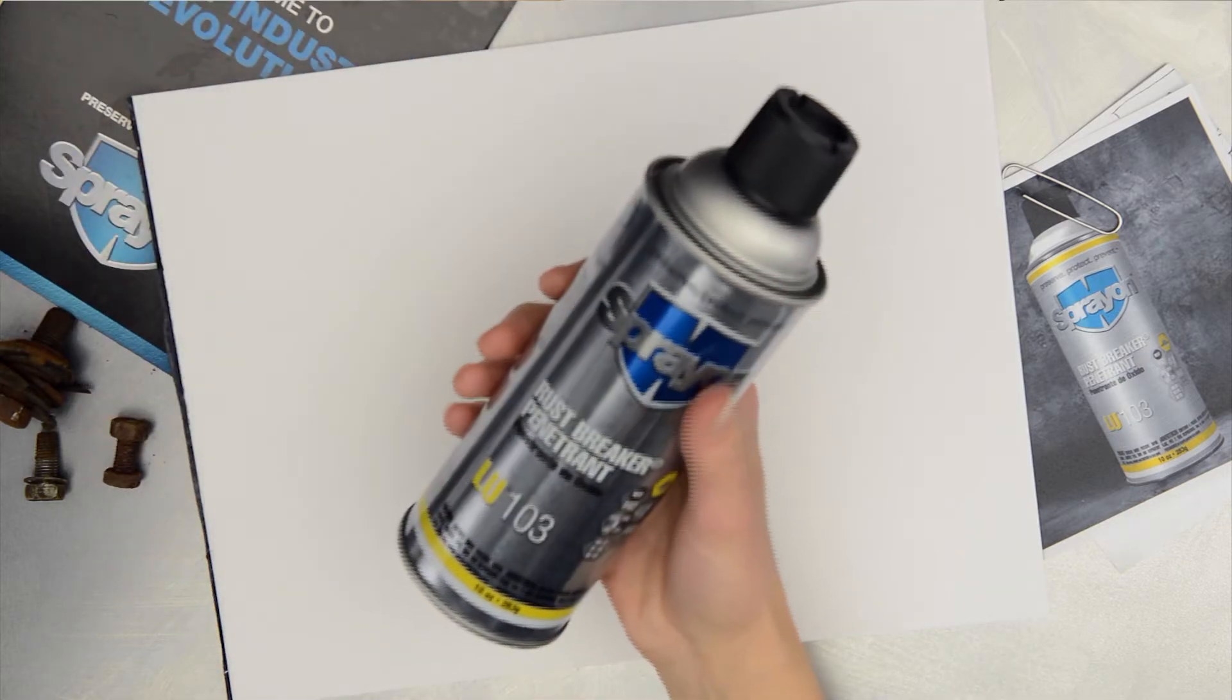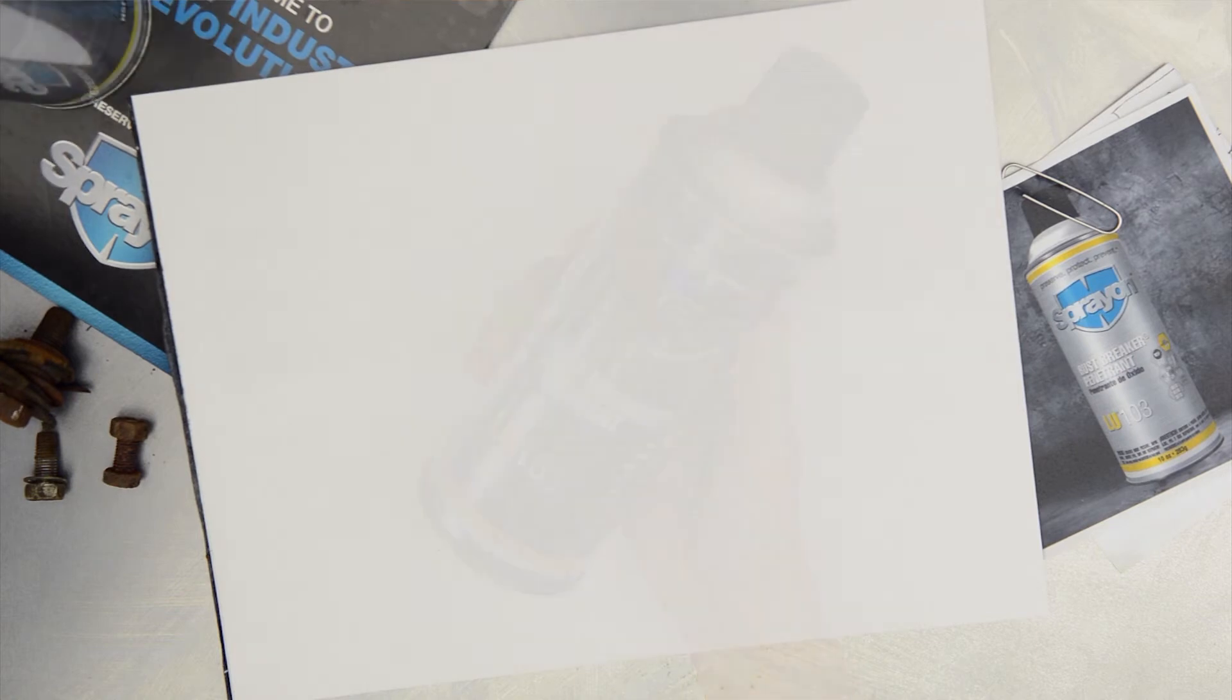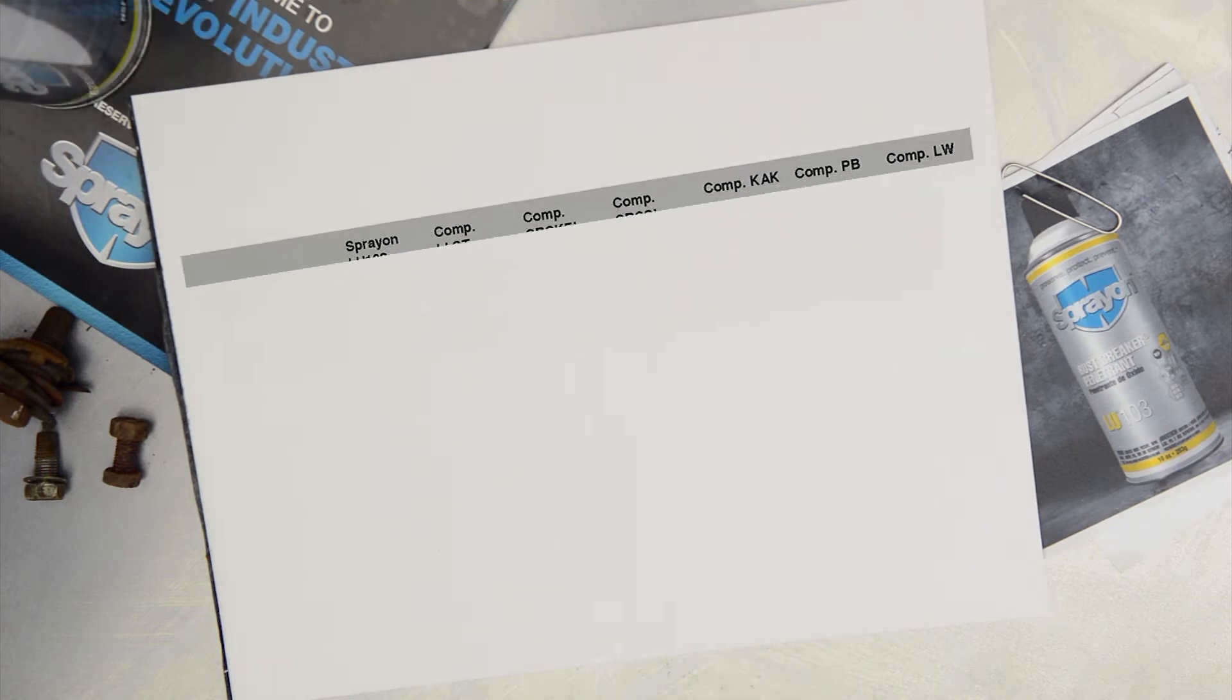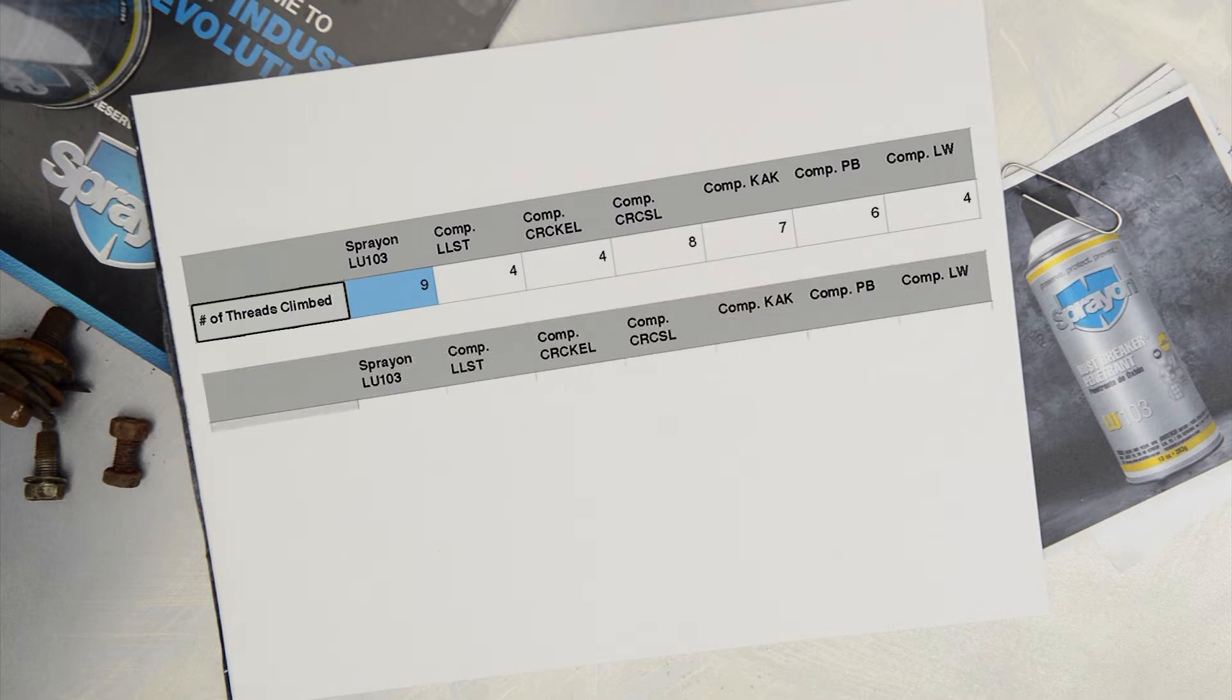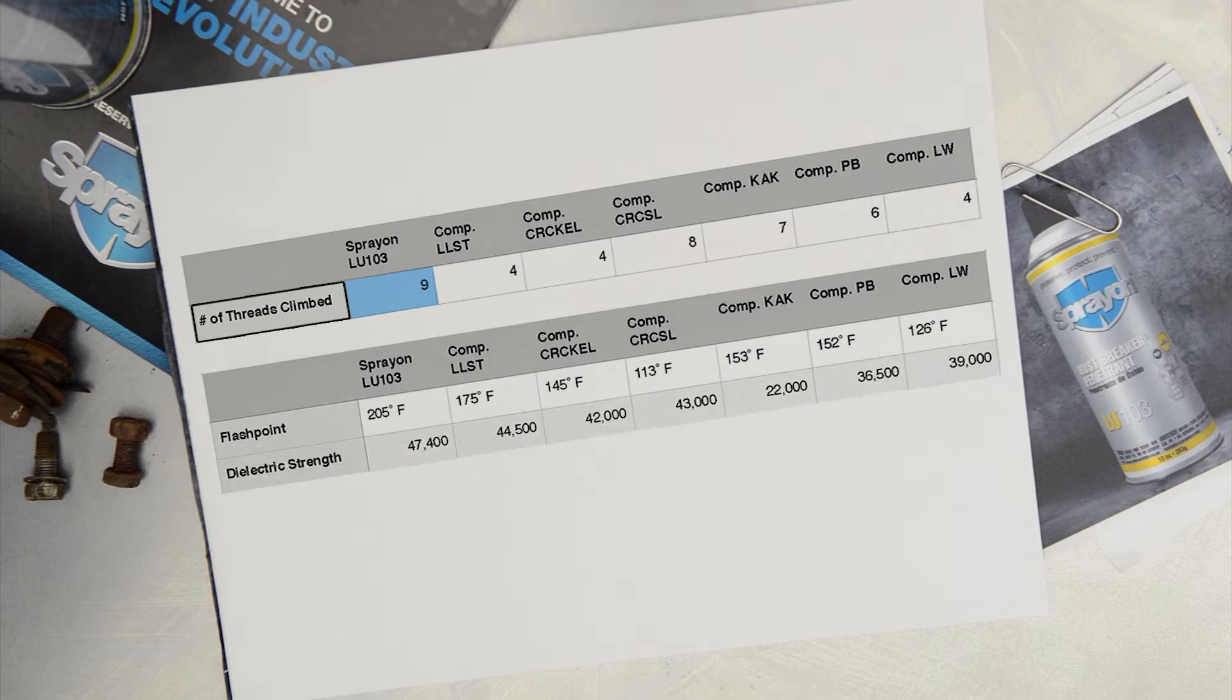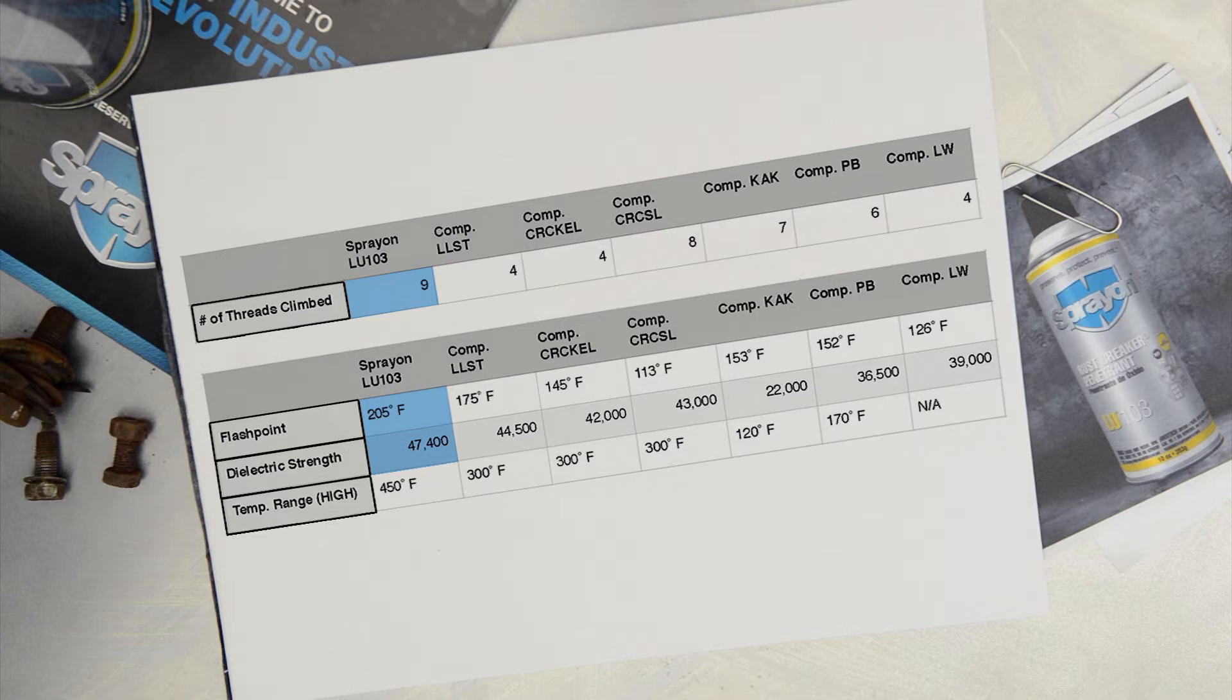The spray-on LU-103 high-performance penetrant is the very best in the industry at penetrating those microscopic spaces to loosen even the most stubborn bolts and metal surfaces. In our wicking test, LU-103 high-performance penetrant outperformed all the leading competitors. The interesting thing is that LU-103 high-performance penetrant will not only release frozen lugs, bolts, and other tight-fitting metal parts better than the competition, but it does so more safely with a higher flashpoint, dielectric strength, and temperature range.